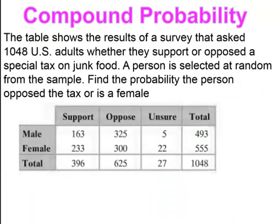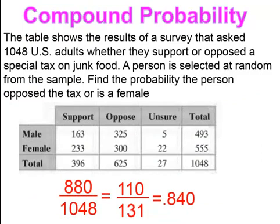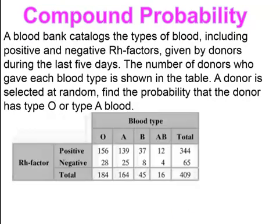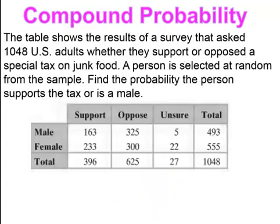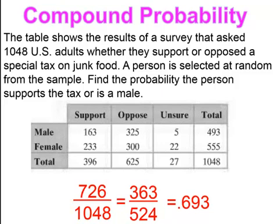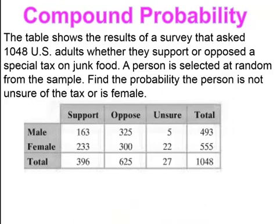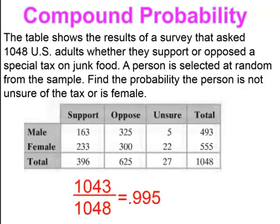Pause and try. You should have gotten a probability of 0.840. Pause and try. You should have gotten a probability of 0.851. Pause and try. This probability is 0.693. Pause and try. And this probability is 0.995.